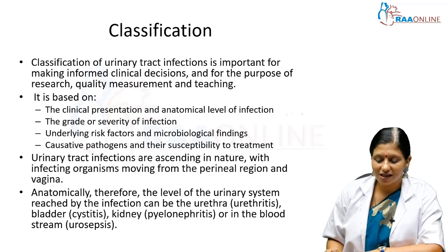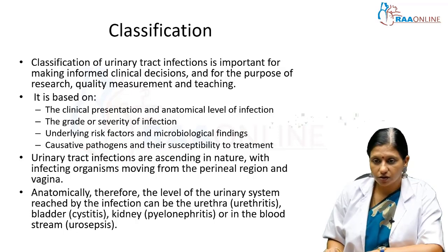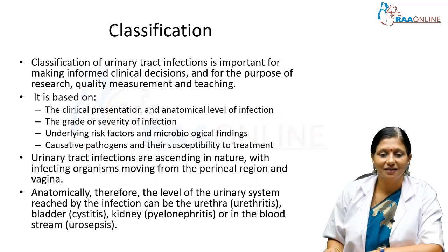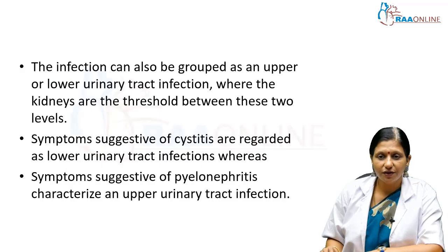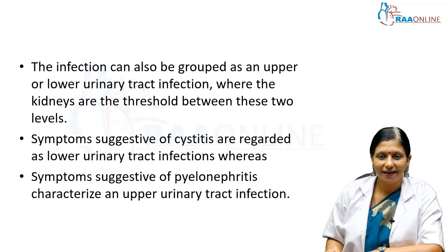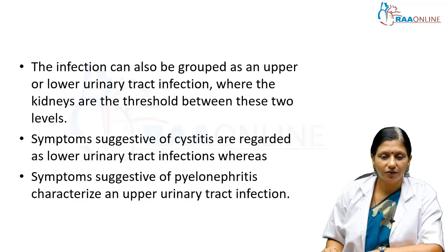Urinary tract infections are ascending in nature — microorganisms move from the perineal region and vagina. Therefore, infection can cause urethritis, cystitis when the bladder is infected, pyelonephritis when the kidney is infected, or urosepsis when the bloodstream is involved. Infections can also be grouped as upper tract or lower tract, with the kidney as the threshold between these two levels. Cystitis is a lower tract infection whereas pyelonephritis is an upper tract infection.